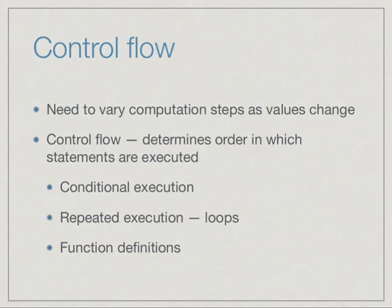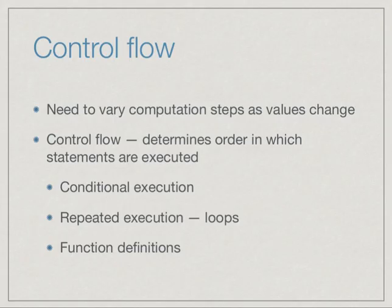There are three fundamental types of control flow. One is conditional execution, which we just described. Another is when we want to repeat something a fixed number of times known in advance — for example, carrying ten boxes one at a time from one room to another. The third is when we want to repeat something where the number of repetitions is not known in advance — like stirring sugar in tea until it dissolves, since we don't know in advance whether we need to stir twice or five times.